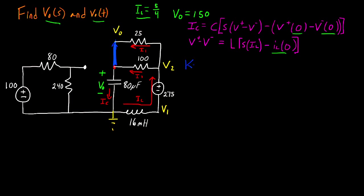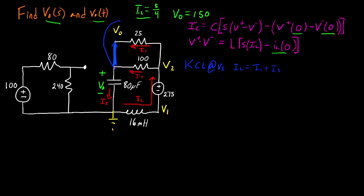Now let's write KCL. For our first KCL at V2, I_L is entering the node and I1 and I2 are leaving the node, so I_L = I1 + I2. We can do another KCL at V_o: I1 and I2 are entering the node and I_C is leaving the node. From this, we see that I_L is actually going to be equal to I_C in this case.